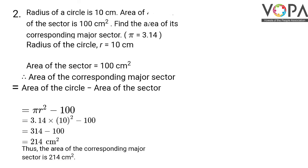Putting the value, we have 3.14 into 10 square minus 100. Now, 3.14 into 10 square, that is 100, gives you 314. Minus 100 gives you 214.